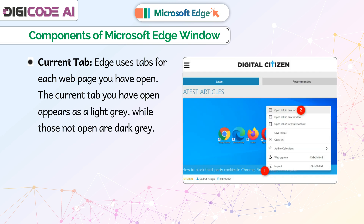Current Tab: Edge uses tabs for each web page you have opened. The current tab you have opened appears as a light grey, while those not open are dark grey.